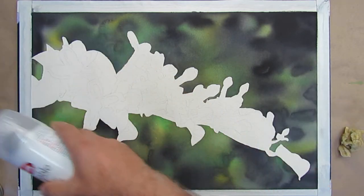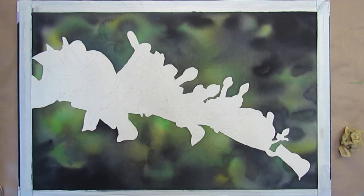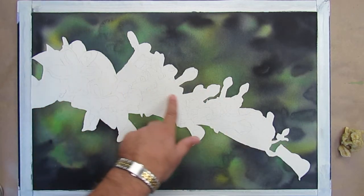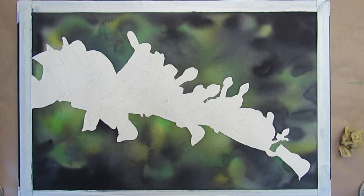So what we did was we drew our pencil lines, sprayed this, let it dry, and then we put the liquid masking on. So our pencil lines are still here for us to make sense.